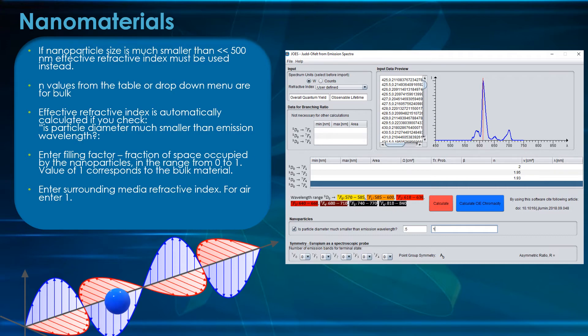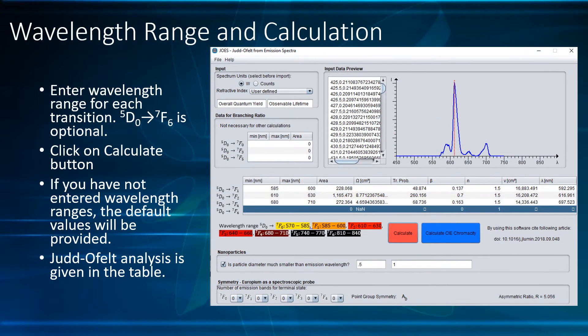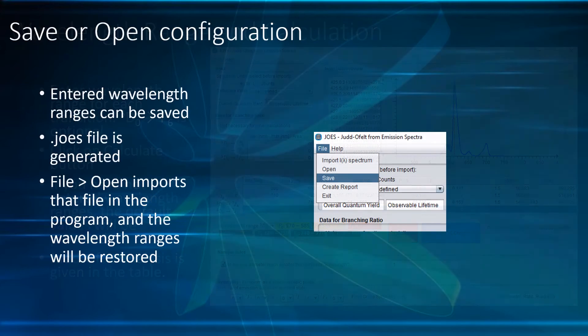Next, enter the wavelength range for each transition. The 7F6 transition is again optional; if you do not enter the value, the default values will be provided. Click on Calculate and in the table the Judd-Ofelt parameters and derived quantities will appear. You can save the wavelength ranges you entered in the table in the JOS file.